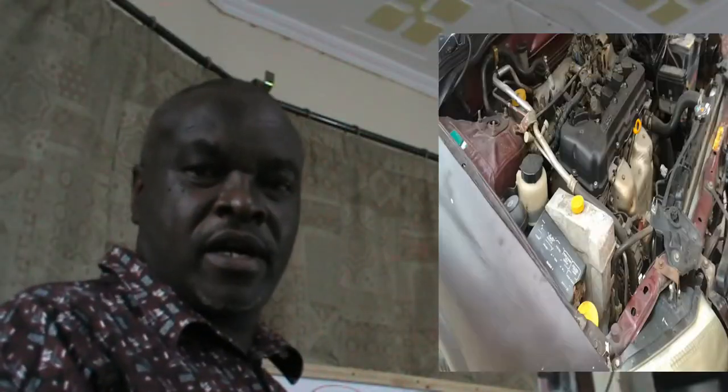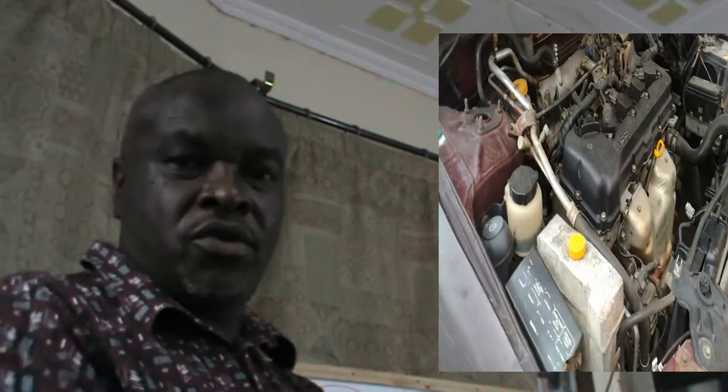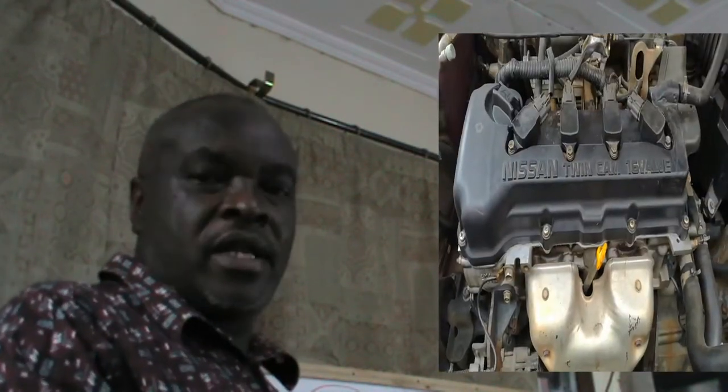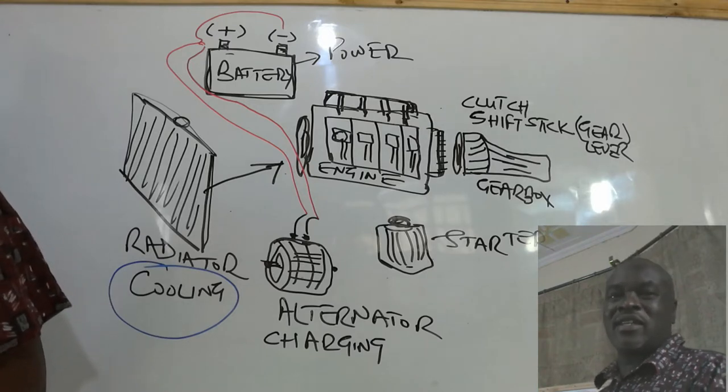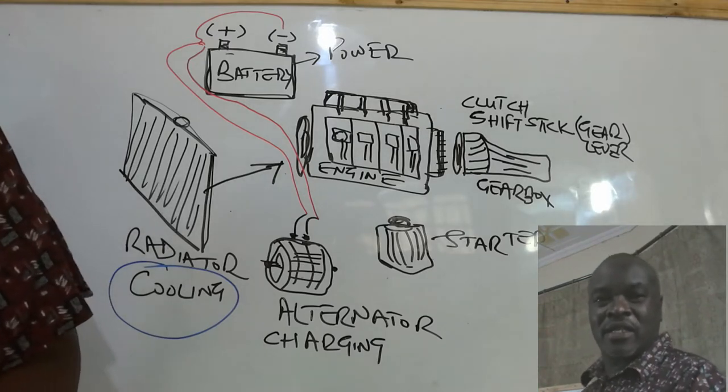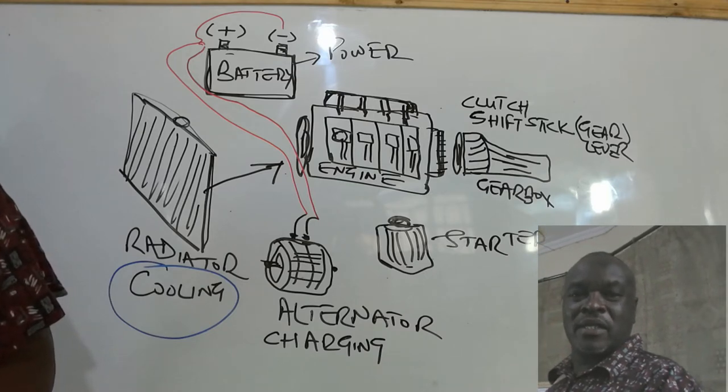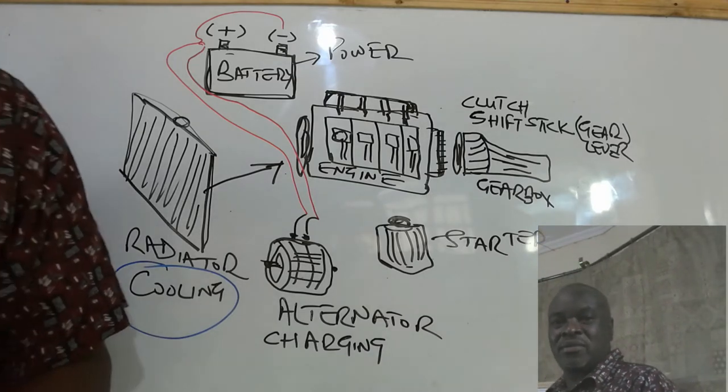When you open the bonnet of your car you see your engine. There are several other components or parts that are connected to the engine which make it operate the way it's supposed to operate. For instance, when you get into your car and start it, there is a component that is responsible for causing the engine to get into motion — that is called the starter. Let us look at which other parts we find connected to the engine.